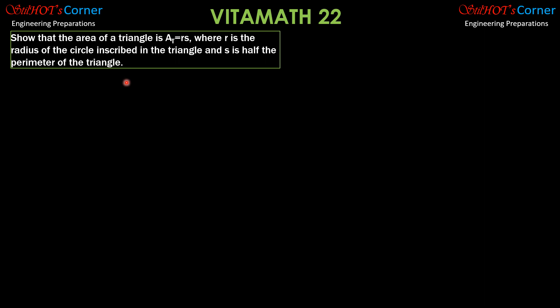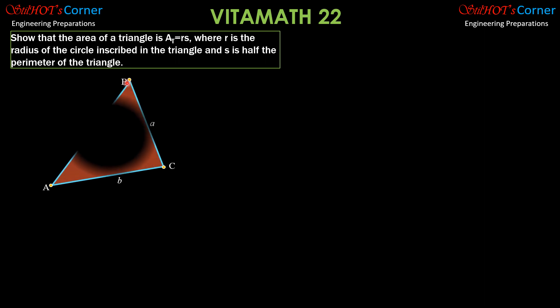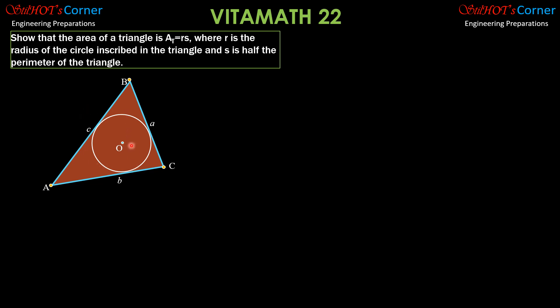Some of you, if not most of you, know this already. But here is the derivation. This is the triangle in general and the circle inscribed in a triangle. The radius is perpendicular to the side at the point of tangency. Let's call the center of the inscribed circle O, and the radius as R, perpendicular to the sides of the triangle.